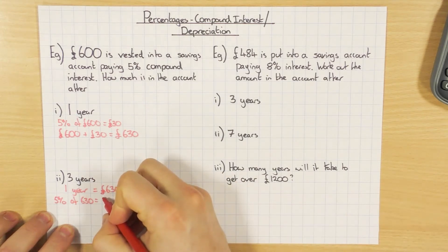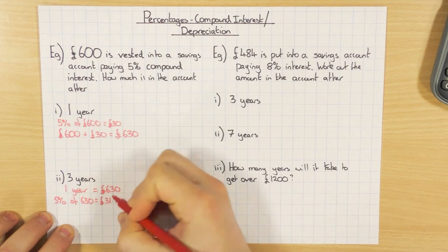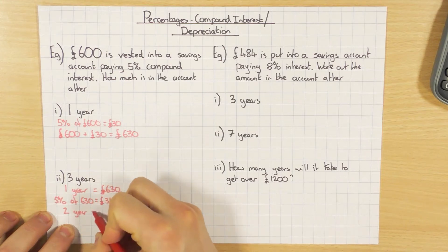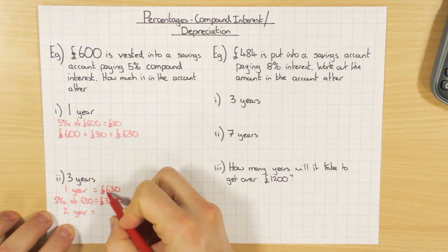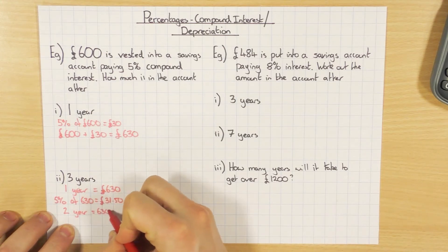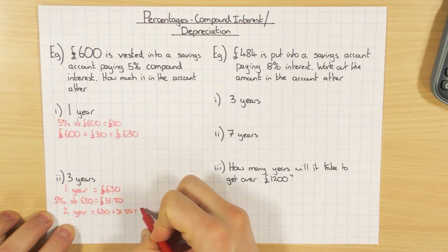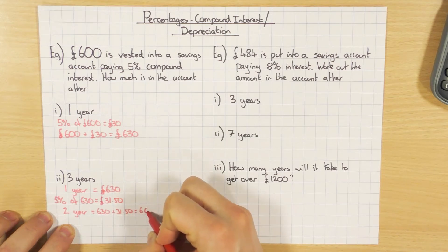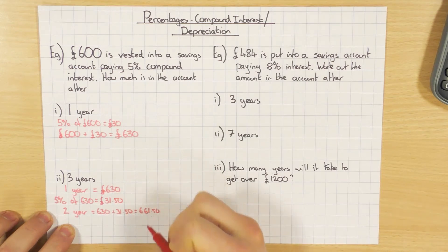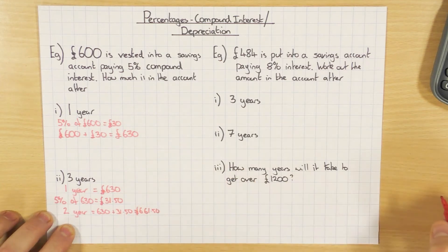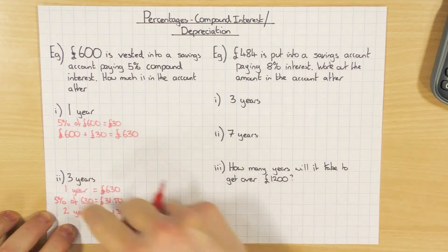So 5% of 630 — work out 10% and then half it — that gives me £31.50. And then for the second year, all I do is add these two together: £630 plus £31.50, which gives me £661.50. So that's for year two.